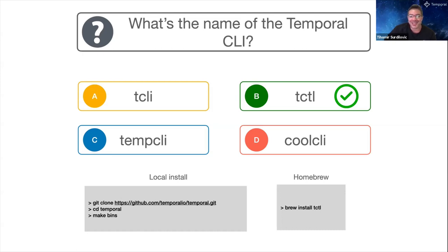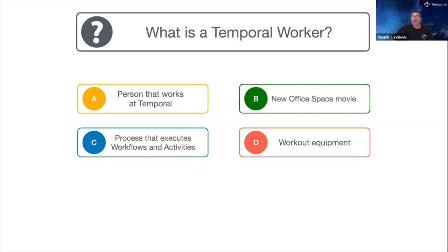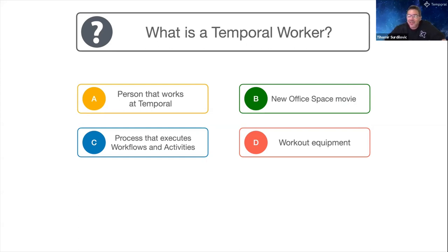Question three: what is a Temporal worker? A, a person that works at Temporal; B, a new office space movie; C, a process that executes workflows and activities; or D, some sort of workout equipment. People are picking C - that's pretty good. The questions get much harder soon.